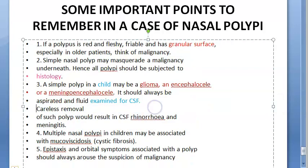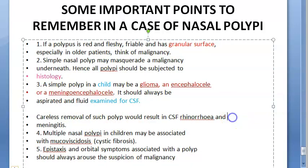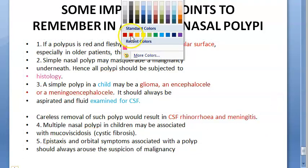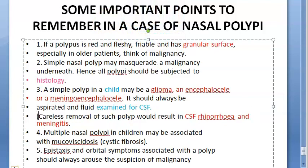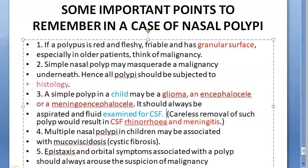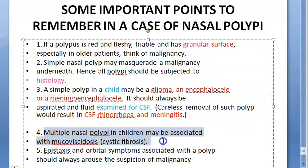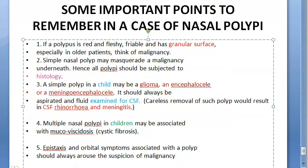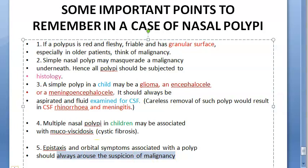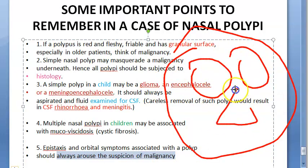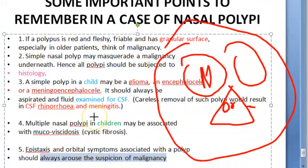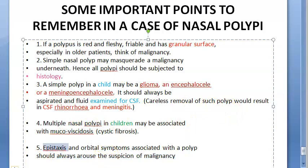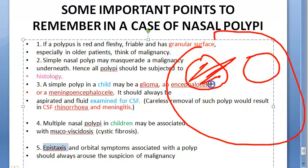Careless removal of such a polyp — if it is an encephalocele or meningoencephalocele — would result in CSF rhinorrhea and meningitis. So do not just pull out the polyp if you suspect it contains CSF, especially in a child. Multiple nasal polypi in children may be associated with mucoviscidosis (cystic fibrosis).